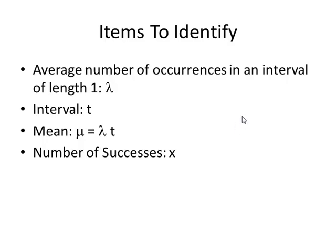Start off with some important items to identify each time. Poisson problems involve the probability of a certain number of occurrences occurring in a given interval. You'll be given an average number of occurrences in an interval of length 1, denoted with the Greek letter lambda. Each problem will involve an interval, which we let t represent. The mean for the Poisson distribution is equal to lambda times t, and then we want to write down the number of successes, which like in binomial problems, is represented by the letter x.